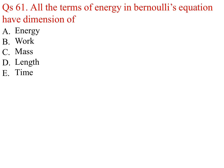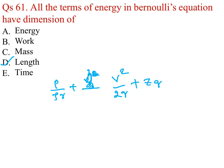All the terms of energy in Bernoulli's equation have dimensions of length. The equation is v²/2g + P/ρg + z = constant. Velocity head, pressure head, and datum head or potential head — all have units of length, in meters of liquid head.